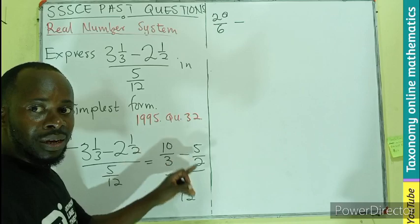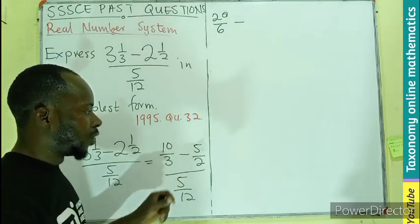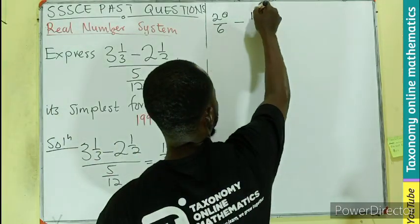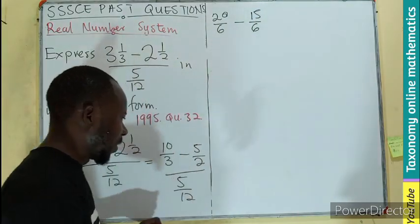Now I am taking all this as my numerator being divided by 5 over 12. You know this is a division of this fraction.